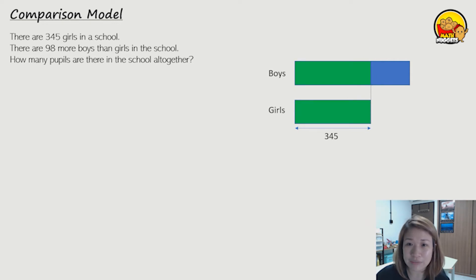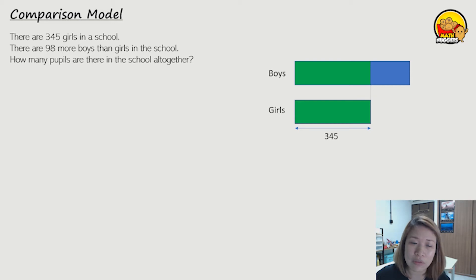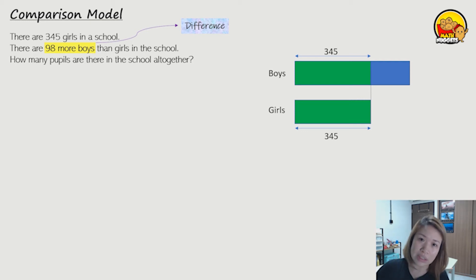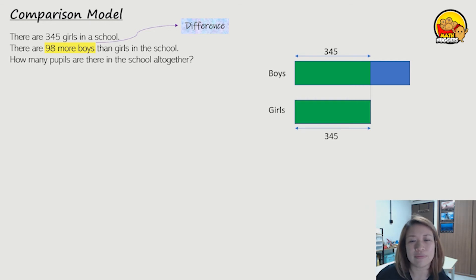The green ones. So what does that mean? Remember the girls were indicated as 345, which means the green part for the boys up there will also be 345. Now they tell us there are 98 more boys — so this 98 more boys represents the difference. So now in the model, where do we put this 98? Because 98 represents the difference, where is the difference in the model?